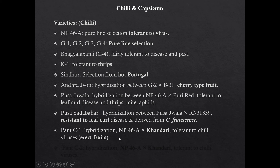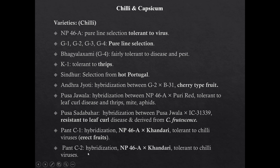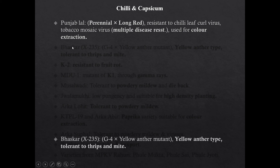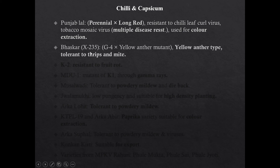Pantah C1 is developed through hybridization between NP46A and Khandari; it is tolerant to chili viruses and has erect fruits. Pantah C2 is also from hybridization between NP46A and Khandari, tolerant to chili viruses. Punjab Lal is developed through hybridization between perennial and long red; it is resistant to chili leaf curl virus and tobacco mosaic virus, and is used for color extraction. Bhaskar X235 is developed through hybridization between G4 and yellow anther mutant; Bhaskar is a yellow anther type variety tolerant to thrips and mite. K2 is resistant to fruit rot.